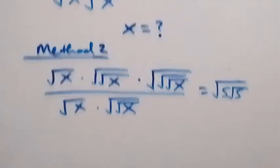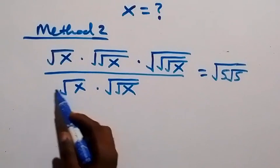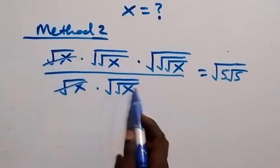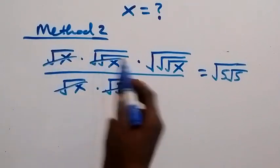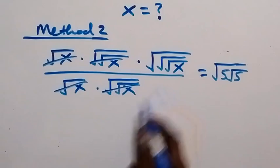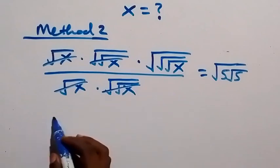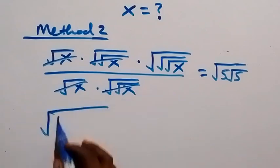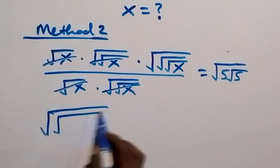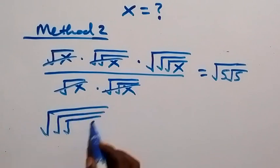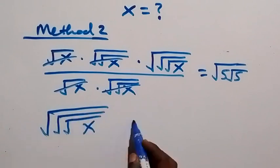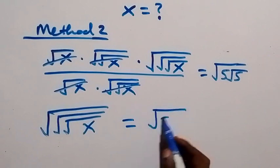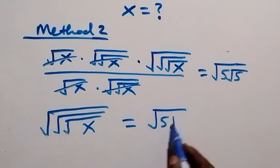In the next step, we can cancel some terms out since they both multiply and divide — these cancel each other. From here, what is left is 3 nested roots of x, which equals root 5 times root 5.